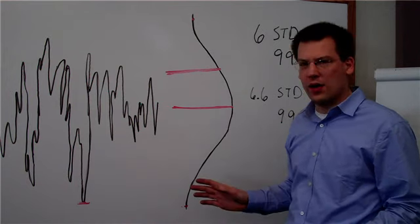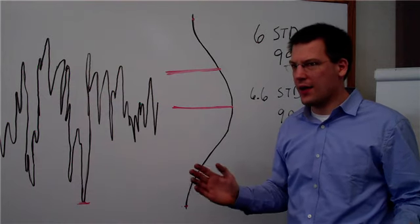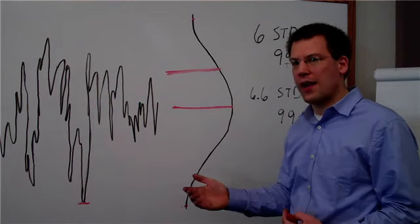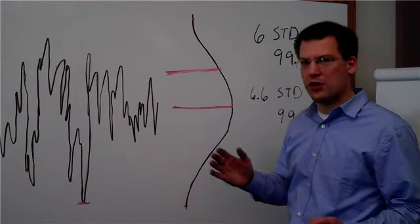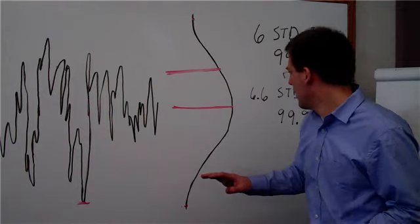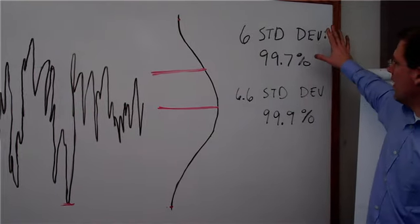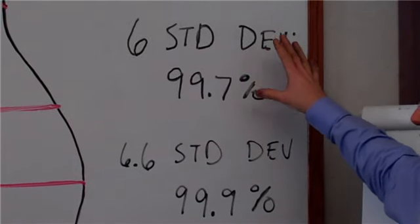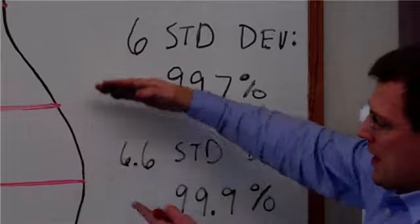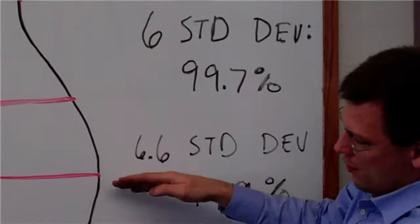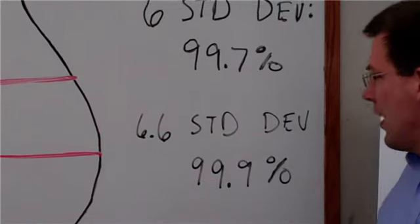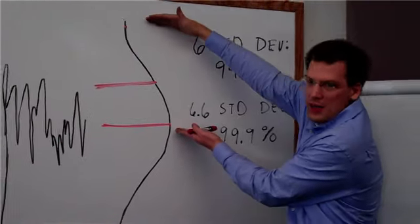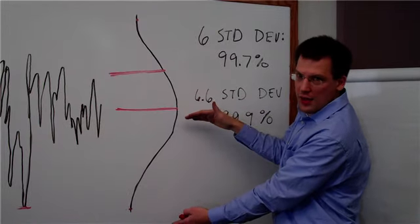And other folks may say, I want to define it as 99.9%, or others may even define it as something else. So depending on how you define it, we'll say what your conversion factor is. So I've drawn up over here, if you want 99.7% of your signal, you need 6 standard deviations. So you need 3 this way and 3 this way.